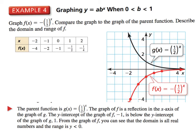If we look at the domain and range of f — just of f — your domain is all real numbers, because the x value can be anything. But the range is everything below the x-axis, which means your range is y is less than 0.